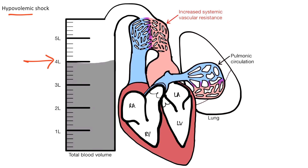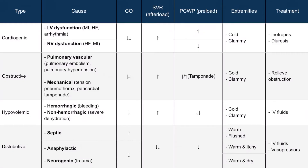When there is decreased cardiac output, the sympathetic response increases the heart rate and systemic vascular resistance. From the table, cardiac output is decreased and systemic vascular resistance is increased. Pulmonary capillary wedge pressure decreases because the blood volume making it to the heart is very low. Since there isn't enough blood available to the periphery, the extremities are cold and clammy. Treatment revolves around volume replacement with IV fluids, and it's also important to treat the underlying cause — for instance, if something is bleeding, you should stop the bleeding.